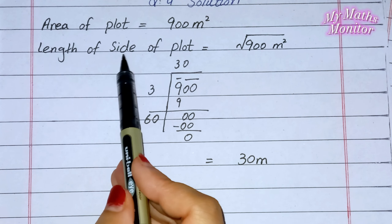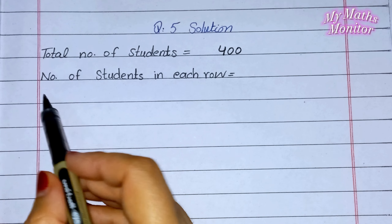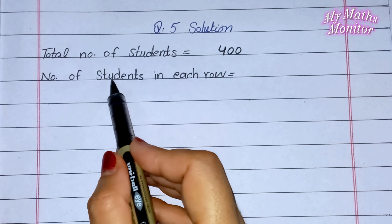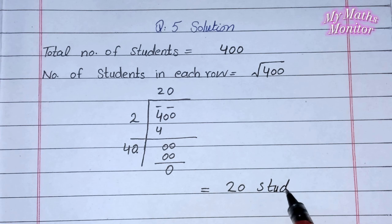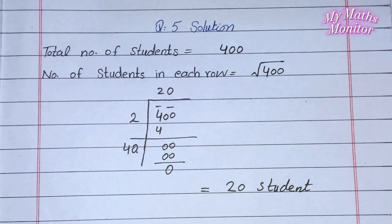Question number 5 solution: Given — total number of students = 400۔ Number of students in each row معلوم کرنی ہے۔ 400 کا square root find out کریں گے، division method سے۔ 2×2=4، minus کریں گے، remaining 0۔ 2+2=4، 40×0=0، remaining value 0۔ اب یہاں پہ طلبہ کی تعداد ہے 20 students. It is the answer.